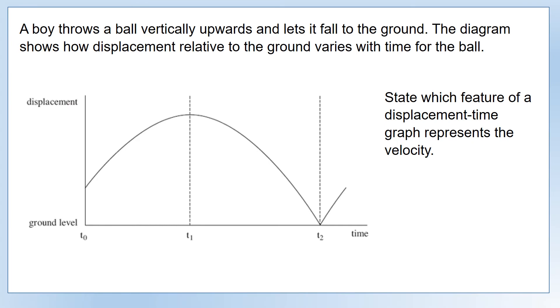Next question: we've got a boy throwing a ball vertically upwards and lets it fall to the ground. We can see from the graph on the left it's starting above the ground but it's going to finish on the ground at the end.